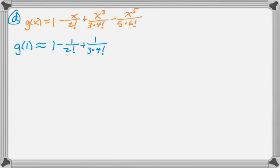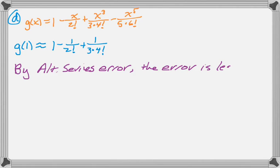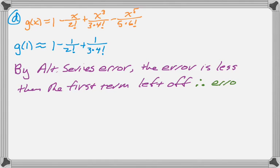And then the next thing is I have to show that the error that I get using this estimate is less than 1 over 6 factorial. Well, now I'm just going to write some stuff. So the alternating series error, I know, is less than the first term left off. It's really less than the absolute value of the first term, I guess, depending on how you look at alternating series. So the first term that I'm leaving off here is 1 over 5 times 6 factorial.